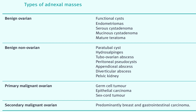This table shows the types of adnexal masses. Benign ovarian masses include functional cysts, endometrioma, serous cyst adenoma, mucinous cyst adenoma, and mature teratoma. Other types include benign non-ovarian, primary malignant ovarian, and secondary malignant ovarian masses.